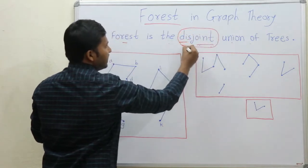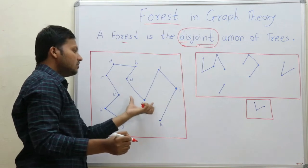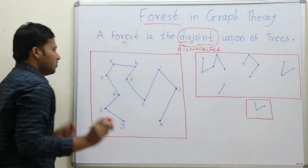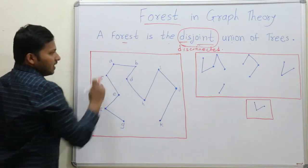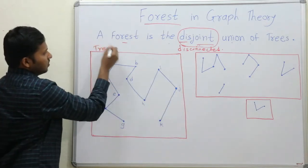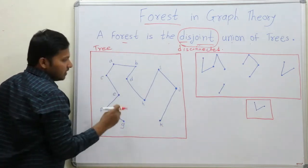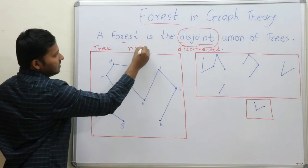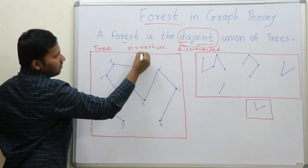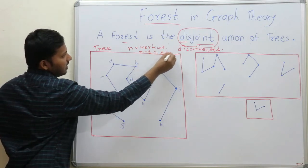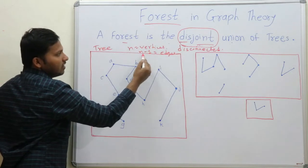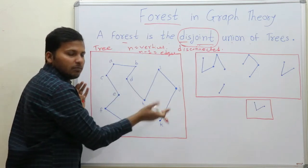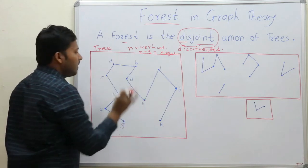In terms of the set of vertices, a forest should be disconnected in terms of the graph. So let's see what that means. This is a tree — in the last video we saw such a tree. There is no cycle in this graph, and if there are n vertices then there are n-1 edges. Now we will make components of this tree by deleting some edges.